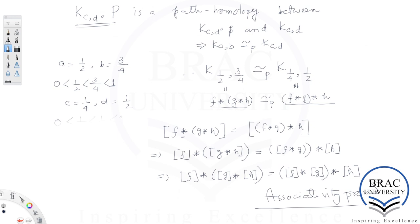Therefore [f]★([g]★[h]) = ([f]★[g])★[h], which proves associativity. This is the end of the first lecture. In the second lecture, we will define the fundamental group and study its various properties. Thank you for attending this long first lecture.